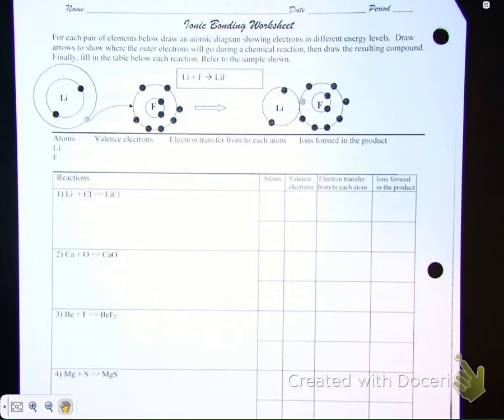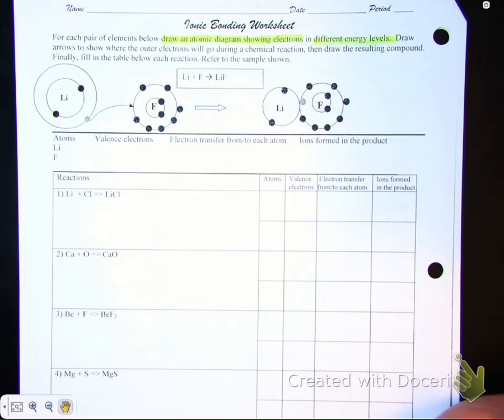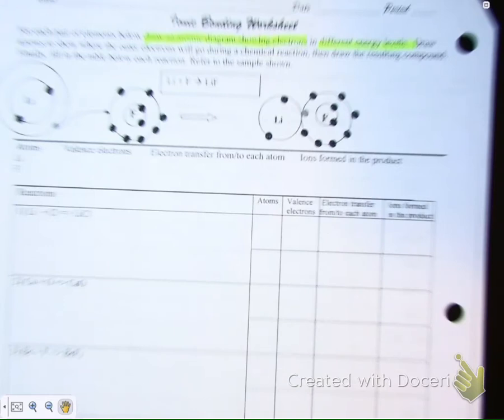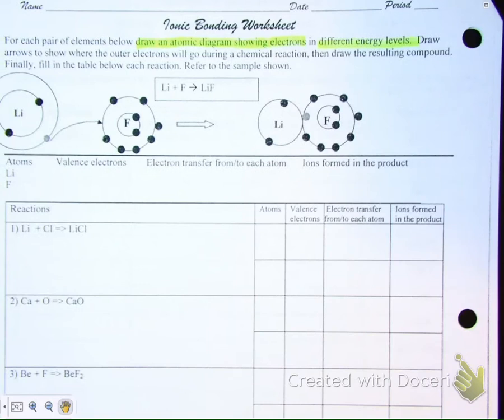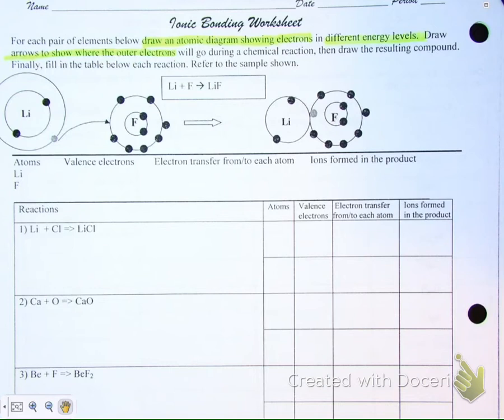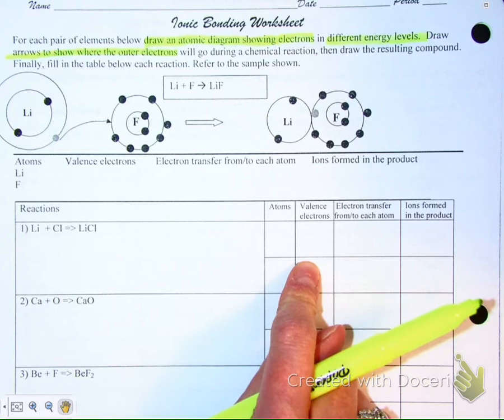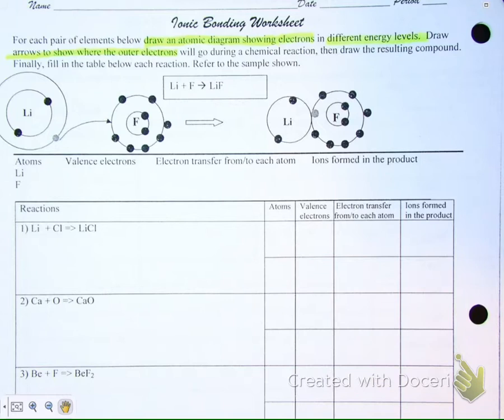So the directions say, and I'm going to go ahead and highlight, for each pair of elements below, draw an atomic diagram showing the electrons in different energy levels. That's the first step. Then you are going to draw arrows to show where the outer electrons will go. So you'll first draw the atoms, then draw arrows to show where the electrons go in an ionic bond. Then you will draw the resulting compound, or the formula. And finally, fill in the chart about what happened in the reaction. And you can refer to the sample. However, we're going to work through the first few together so that you fully understand what you're going to be doing.